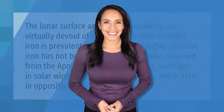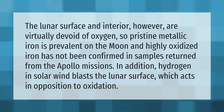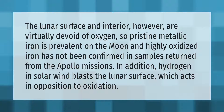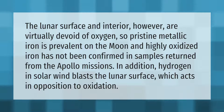The lunar surface and interior are virtually devoid of oxygen, so pristine metallic iron is prevalent on the moon, and highly oxidized iron has not been confirmed in samples returned from the Apollo missions. In addition, hydrogen in solar wind blasts the lunar surface, which acts in opposition to oxidation.